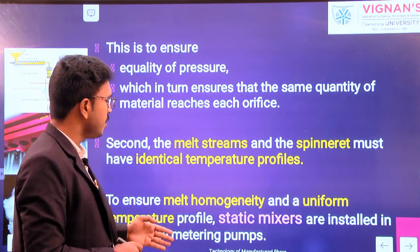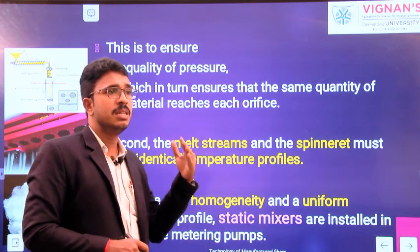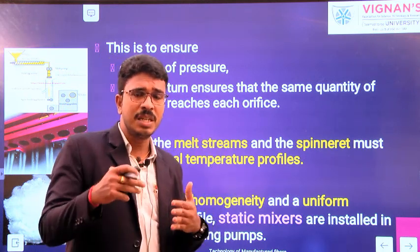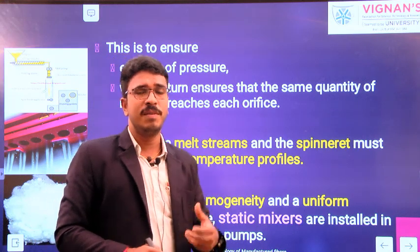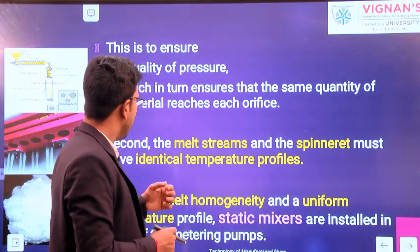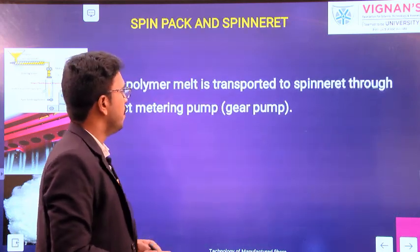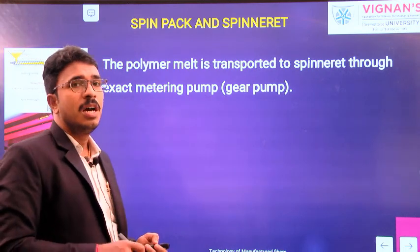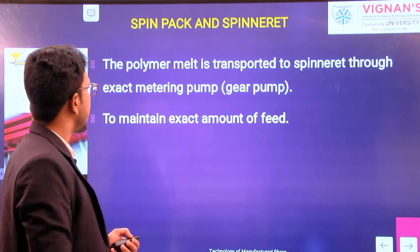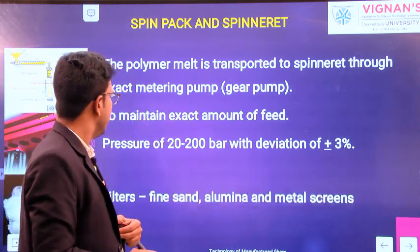While selecting the manifold, the design consideration as well as the temperature profile of the manifold is very, very important to maintain the required qualities in the final output of filaments. After the manifold, the molten polymer is fed to the spinning pump, or what we can call the spin pack assembly. The spin pack assembly consists of a gear pump, a filter, and then the spinneret.